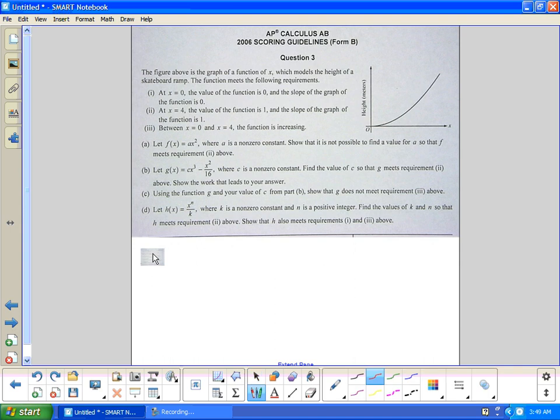So it starts with a figure that involves a graphical function x, which models the height of a skateboard ramp. The function meets the five requirements. At x equals zero, the value of the function is zero and the slope of the function is zero.